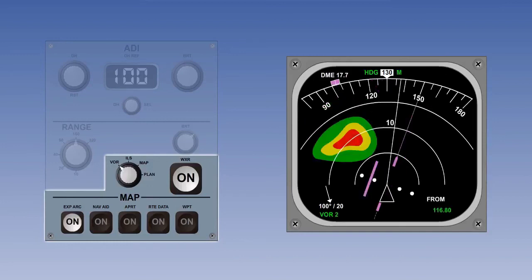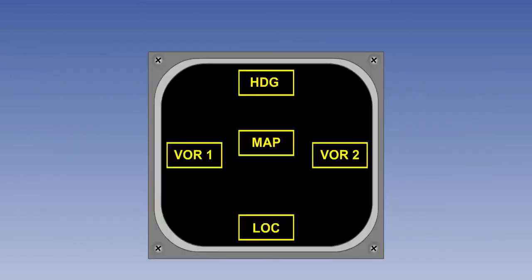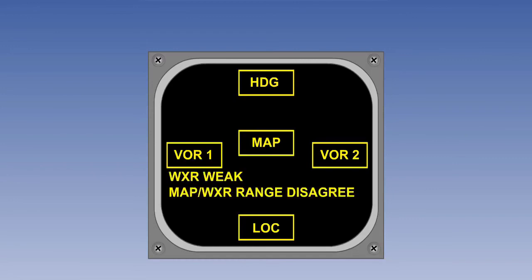Finally, let's look at failure annunciations. Should a signal from a data source fail, the failed data source will be highlighted or flagged in yellow. Here we can see failure annunciations of the heading, the localizer, the map display, and both VORs. Clearly you would not normally expect to see all of these at once — this is a demonstration. In addition, faults may be displayed in message form on the EHSI display.